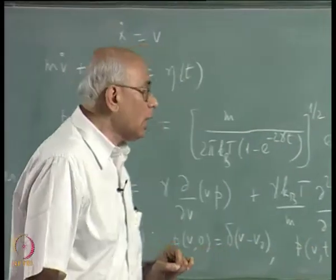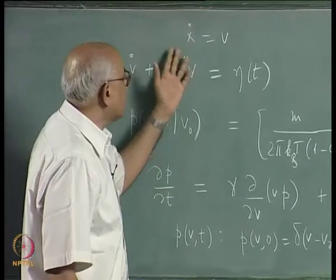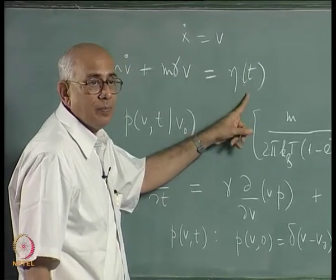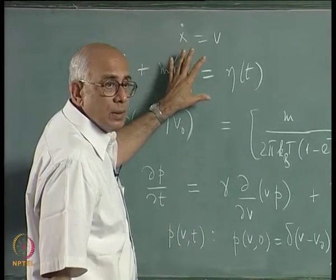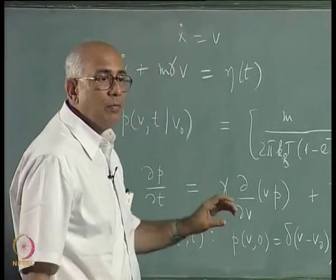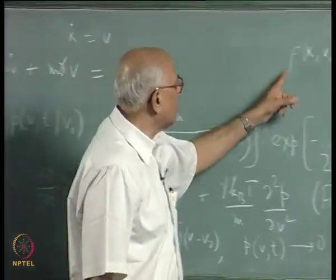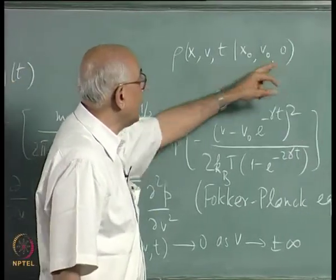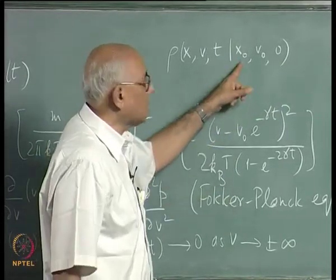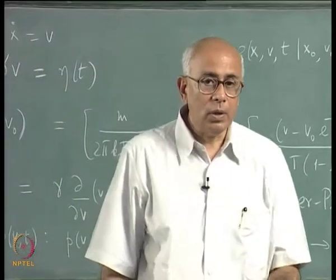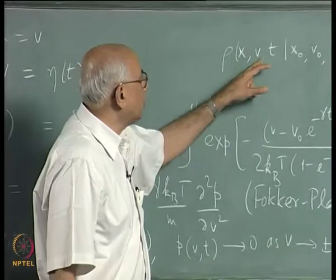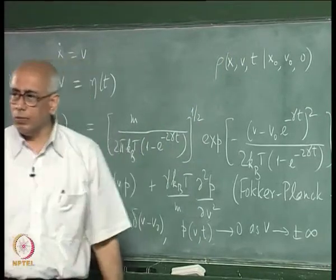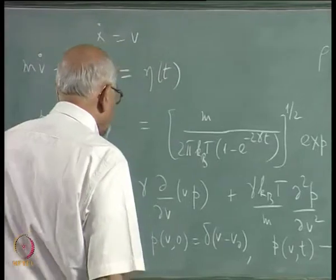The coupled set of equations is ẋ = v and v̇ satisfies the Langevin equation with the random component. Corresponding to this stochastic differential equation I have a probability density in phase space ρ(x, v, t). When multiplied by dx·dv this gives the probability that a particle starting at x₀ with velocity v₀ at t=0 is found in the range (v, v+dv) and (x, x+dx) at time t. This quantity also satisfies a Fokker-Planck equation.